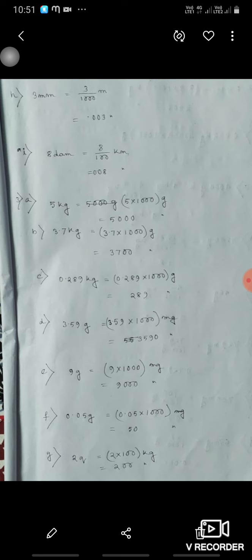Then 3 millimeter means 3 upon 1000 is 0.003 meter. 8 decimeter means 8 upon 100 kilometer means 0.08 kilometer. 5 kilogram means 5 into 1000 gram, 5000 gram. 3.7 kilogram means 3.7 into 1000 means 3700 gram. 0.289 kilogram means 289 gram.